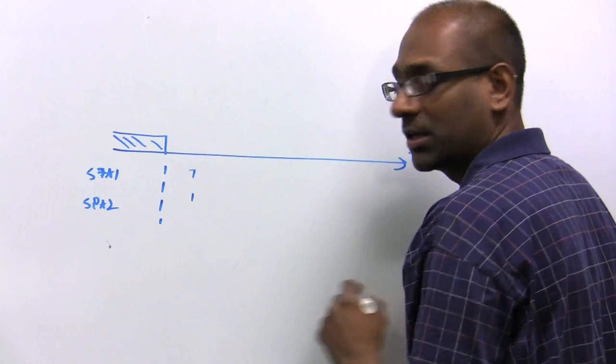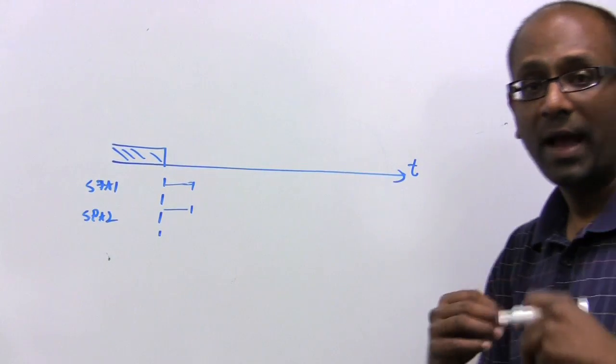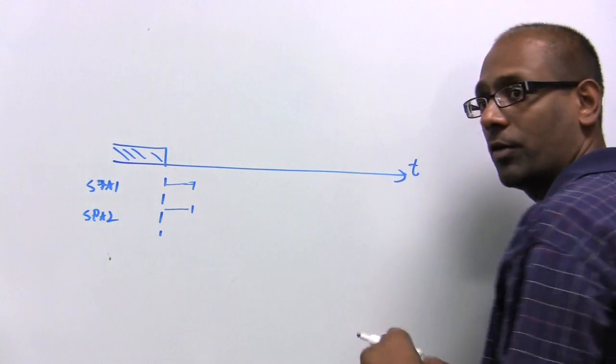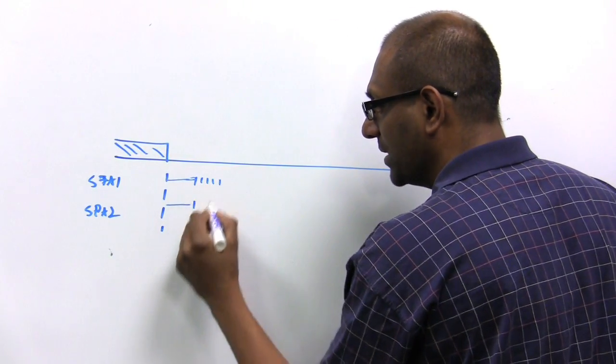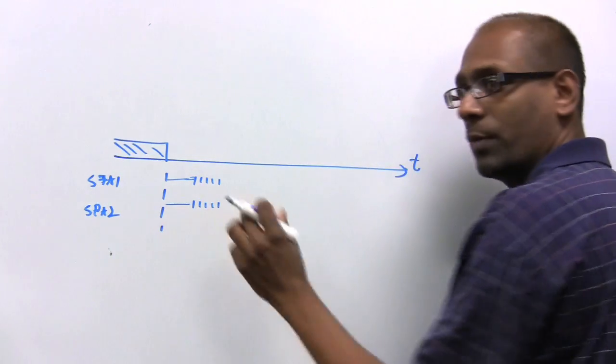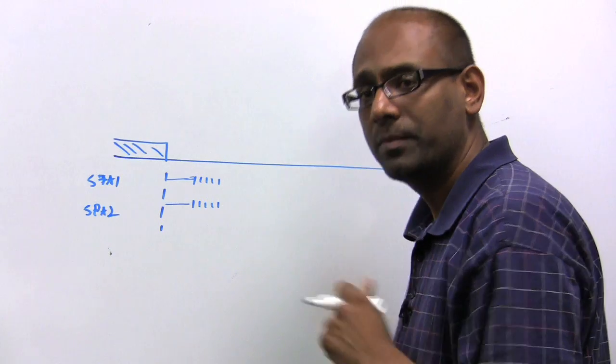Once the channel becomes free, both of them wait for a certain period of time. For the purpose of this video, it is important to understand that each of these devices then, once it waits for a certain period of time for the channel to be free, then starts counting down some backoff value.